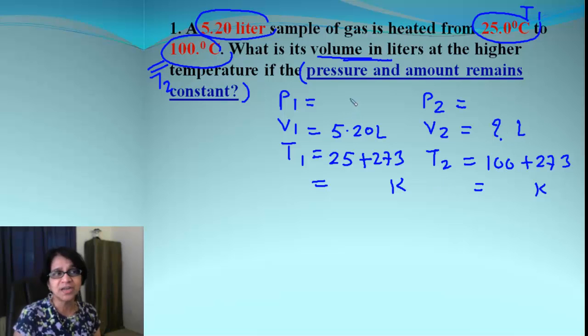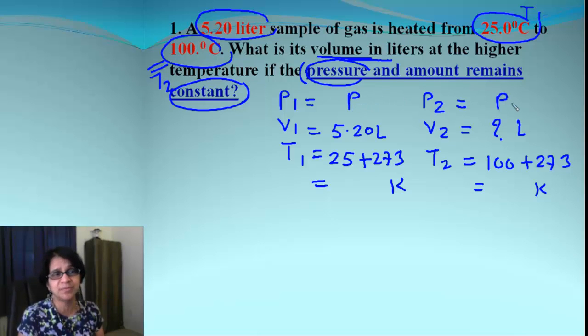About the pressure, it says the pressure is constant. And, of course, the amount also is constant. So, you can just say pressure equals P. P1, P2 both equals P. Cancel them.